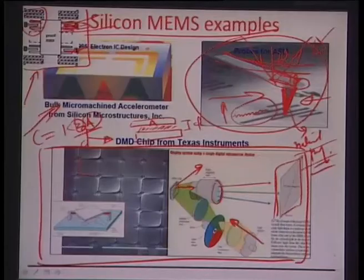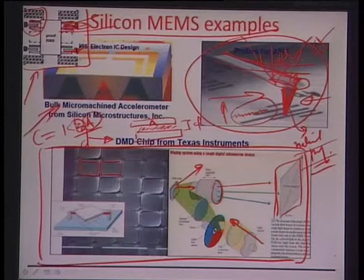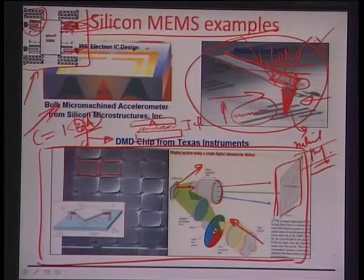Each mirror forms one pixel and millions of pixels together make an image. When mirrors rotate in and out of focus, various pixels are switched off or on. A digital image from a computer is transferred to such a DMD chip, where light beams switch pixels on and off using ones and zeros, digitally transferring the image to the projector.